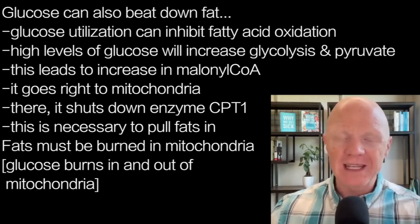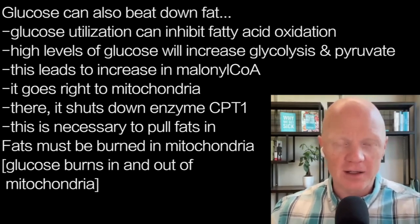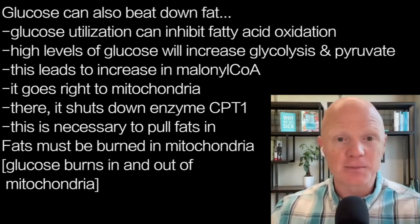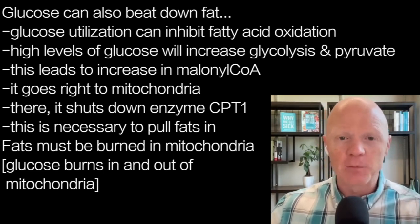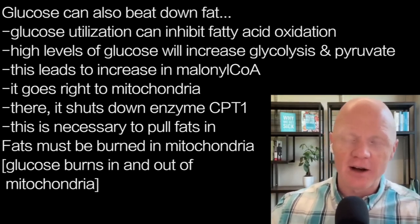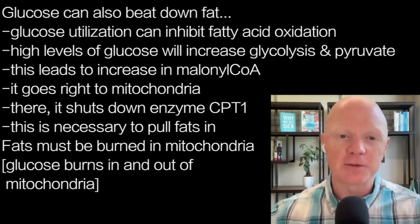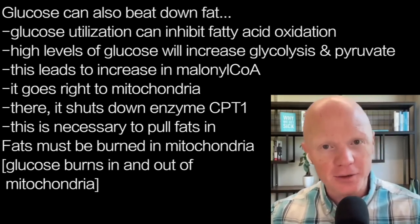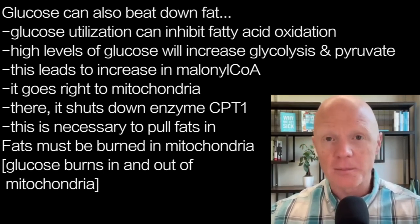So when we have high levels of glucose, it will increase glycolysis and increase pyruvate. When we continue with this, increased glycolysis will end up resulting in the increase of another CoA molecule — this time not acetyl CoA, but a molecule called malonyl CoA.